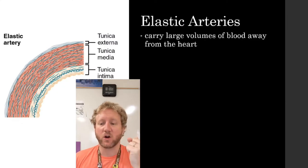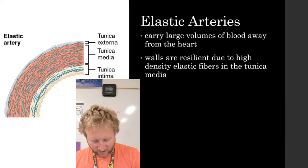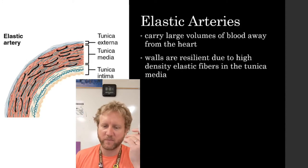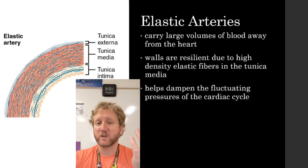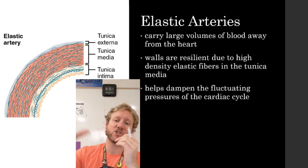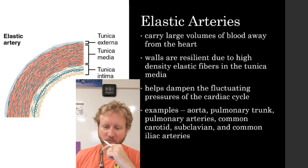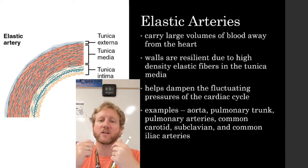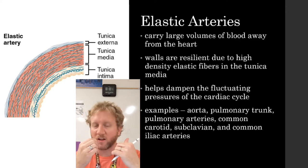The first type is elastic arteries. These carry very large volumes of blood away from the heart. The walls have a lot of elastic fibers in the tunica media — you can see these little lines in the diagram — which give the artery walls their resiliency. They act kind of like shock absorbers, dampening pressure fluctuations from blood leaving the heart. These include all your major arteries: the aorta, the pulmonary trunk, the common carotid, subclavian, and common iliac arteries.